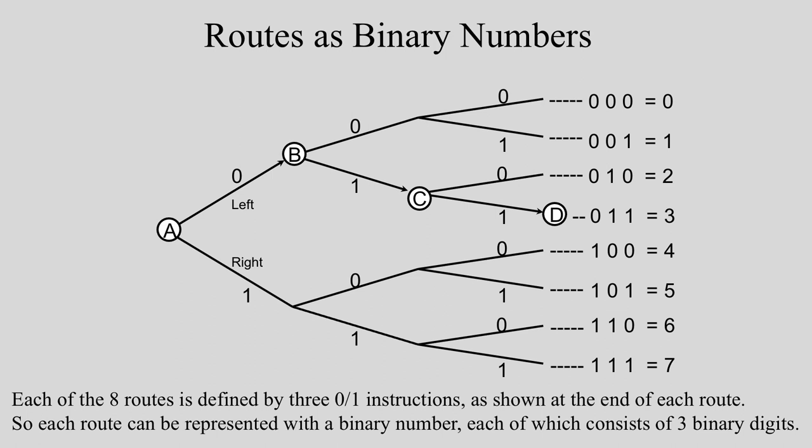Each of the 8 routes is defined by 3 instructions, a 0 or a 1, as shown at the end of each route. So each route can be represented with a binary number, each of which consists of 3 binary digits.